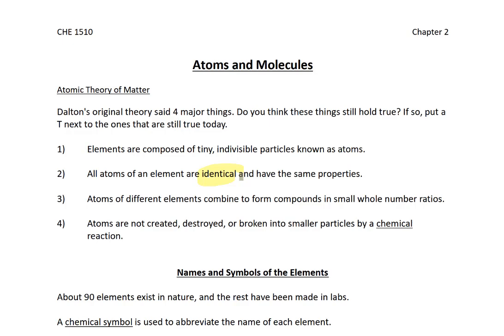Number three: atoms of different elements combine to form compounds in small whole number ratios. This one is true. If we imagine something like water, water is always going to be a chemical that has two H's to one O. The small whole number ratios are those subscripts there.